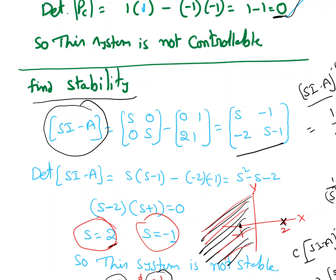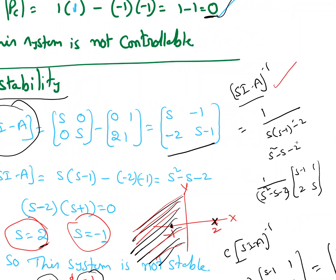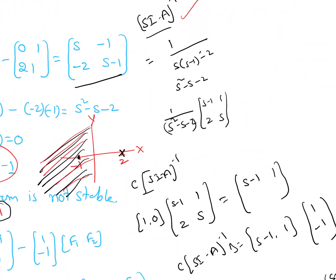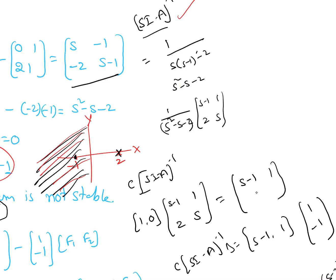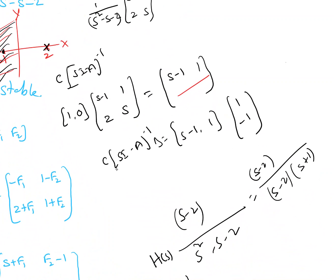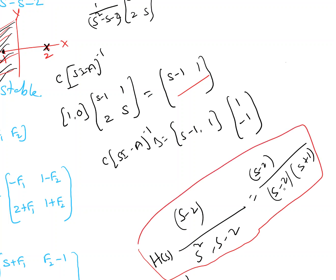So we found that this is a not controllable and not stable system. Now we will find H(s) to find out which pole is the uncontrollable pole. I found sI minus A inverse, which is 1 over (s² - s - 2) times the matrix [s-1, 1; 2, s]. Multiplying by c, I get c(sI-A)⁻¹ = [s-1, 1]. The full transfer function H(s) = c(sI-A)⁻¹b equals (s-2) over (s-2)(s+1). So the uncontrollable pole is s equal to 2, and in this case it is also the unstable pole — though the uncontrollable pole and unstable pole need not be the same all the time.